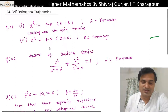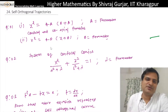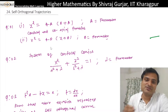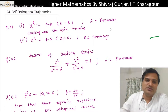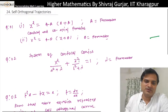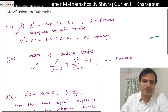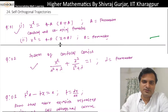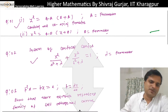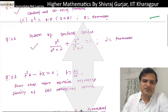Let's solve some problems based on orthogonal and self-orthogonal trajectory concepts. This is a PYQ (previous year question), so there are a very limited number of examples.